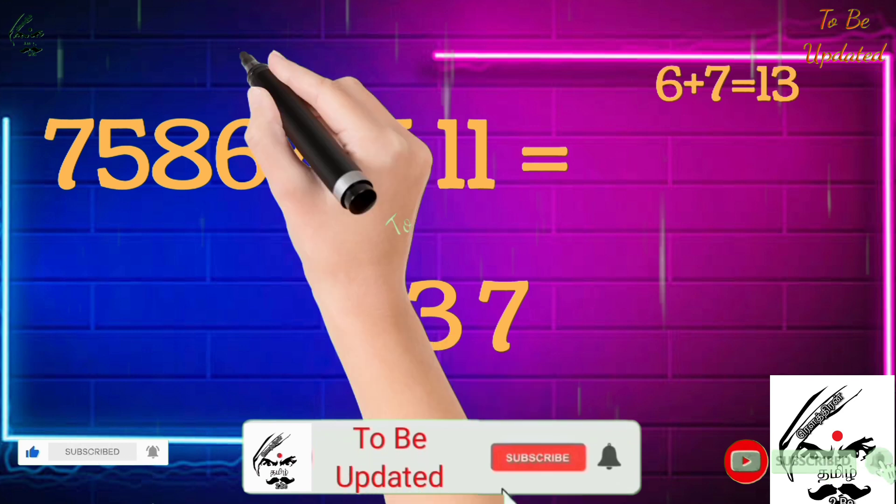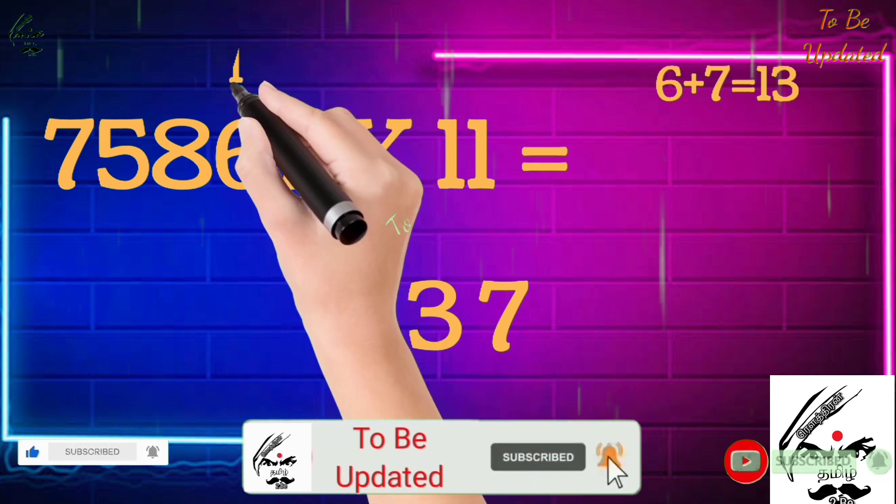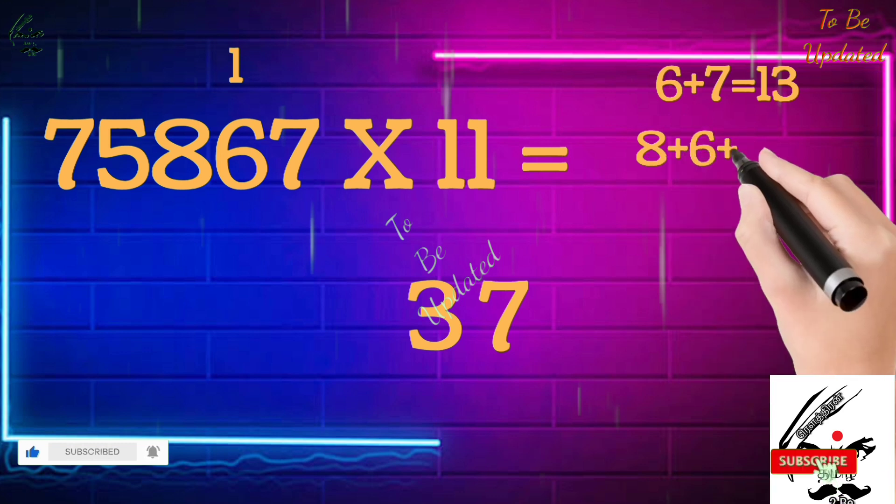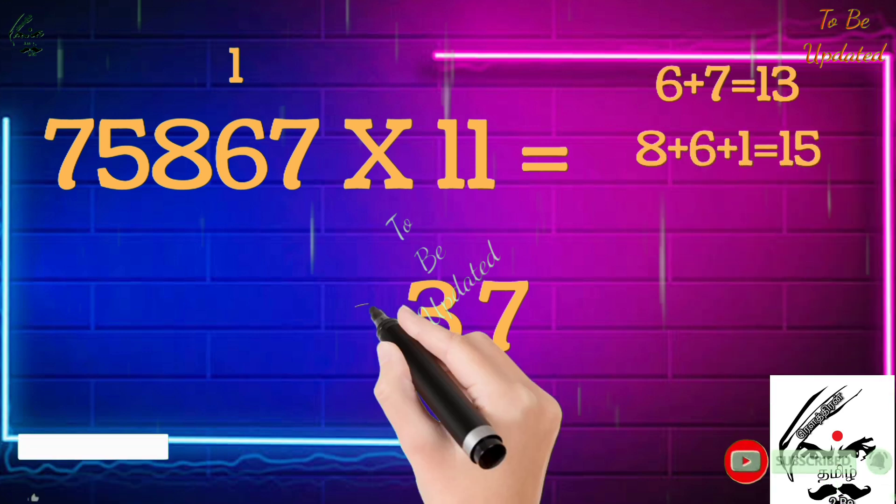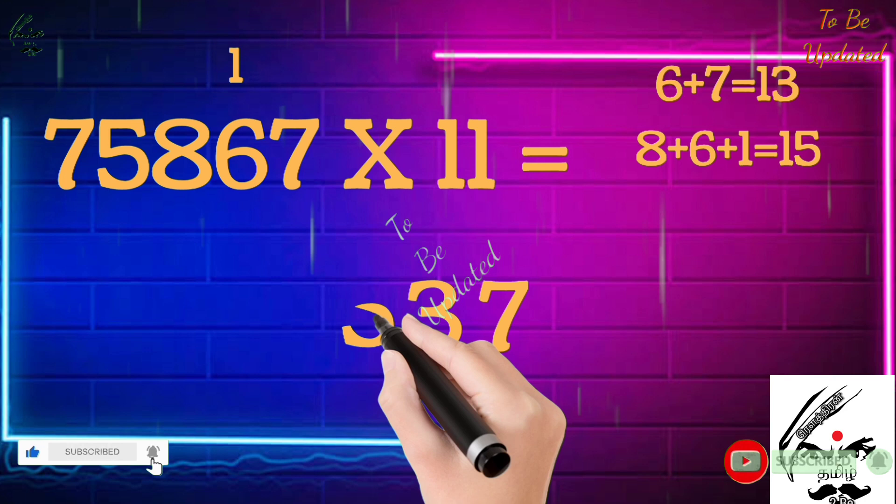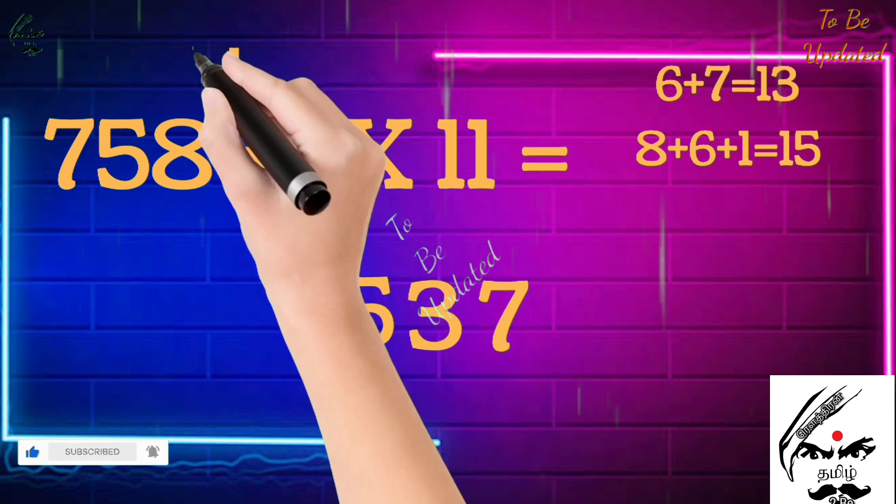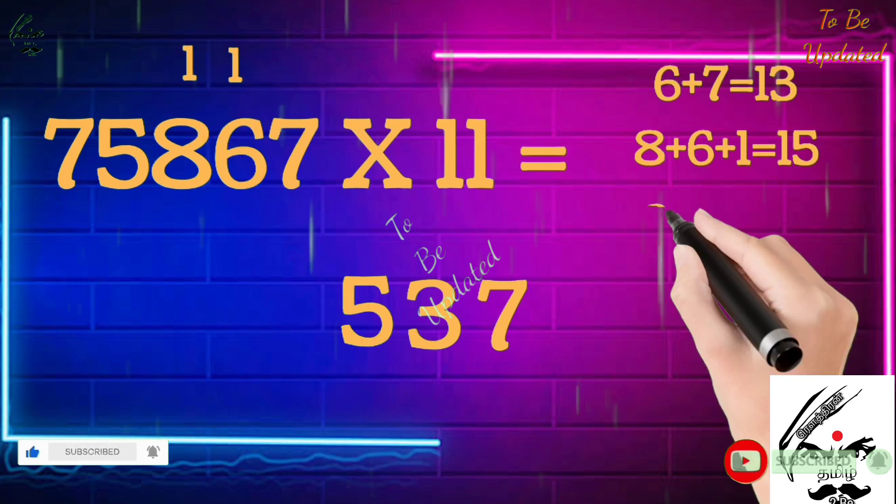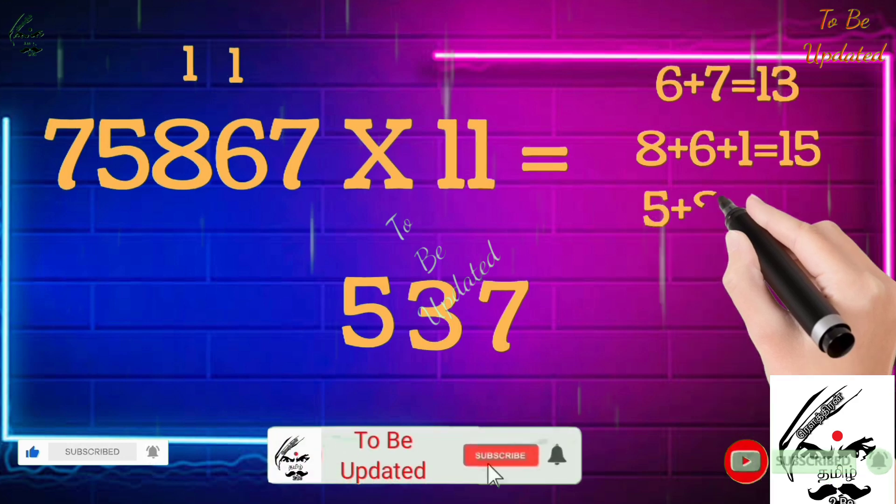Next, 8 plus 6 we get 14, plus 1 we get 15. So in that 15 we write the 5 here and we take the 1 as a remainder. Now 5 plus 8 is 13, plus 1 we get 14.